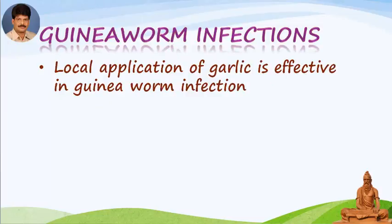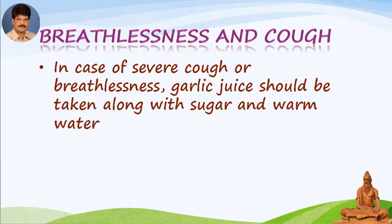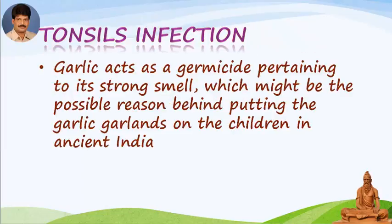For guinea worm infections, local application of garlic is effective. In cases of breathlessness and cough, for severe cough or breathlessness, garlic juice should be taken along with sugar and warm water.